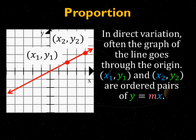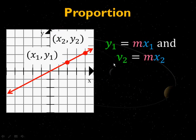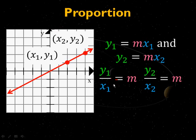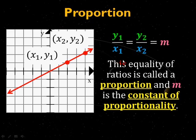Now, proportions. On the graph, we have a line in the form y equals mx. Two points on the line are x1 comma y1 and x2 comma y2. In direct variation, often the graph of the line goes through the origin. Both of those points are ordered pairs of y equals mx. So, y1 equals m times x1, y2 equals m times x2. That's basically substituting each point into the general form of the line. If this is the case, let's divide both equations by the x term, and you get y1 over x1 equals m, and y2 over x2 equals m. You notice that the ratio of the coordinates equal m. This is the constant of proportion.